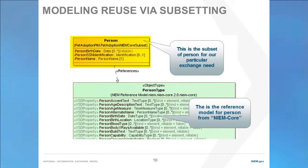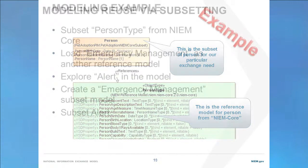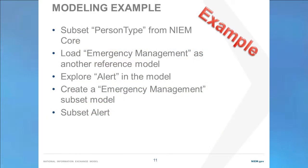What you do is take a concept out of a reference model. In this example, we're taking person type out of NIEM core. You then define a subset of it that references that type. In this case, we see that person references person type. This means that everything defined in person must match something defined in person type. We'll find person type in NIEM core, create a subset of it, then load the emergency management domain, another reference model, and look for the alert concept. We'll create an emergency management subset model and subset this alert concept.